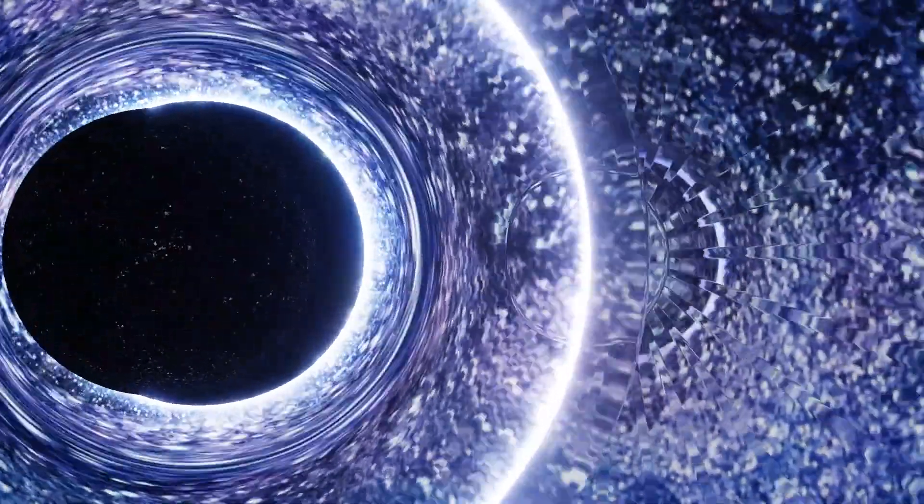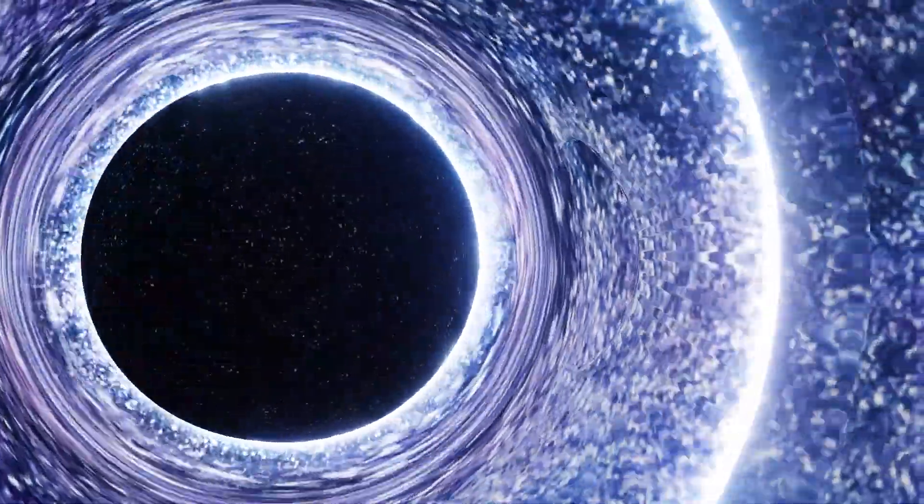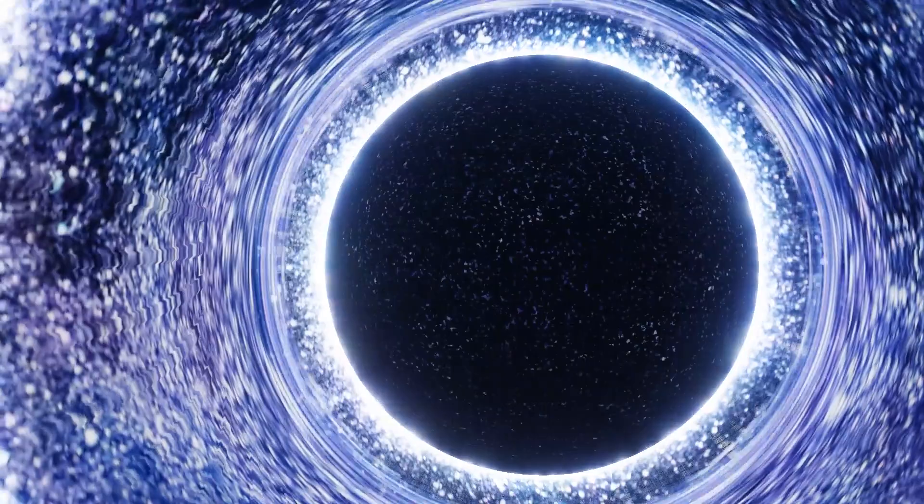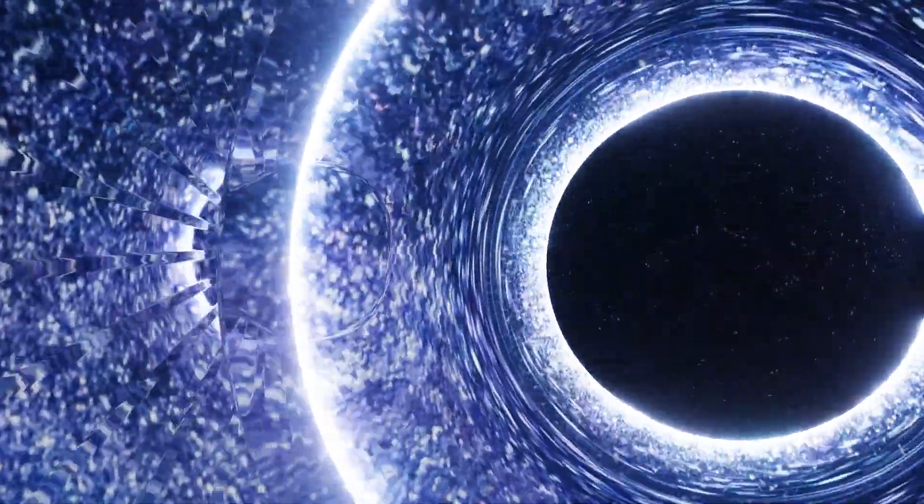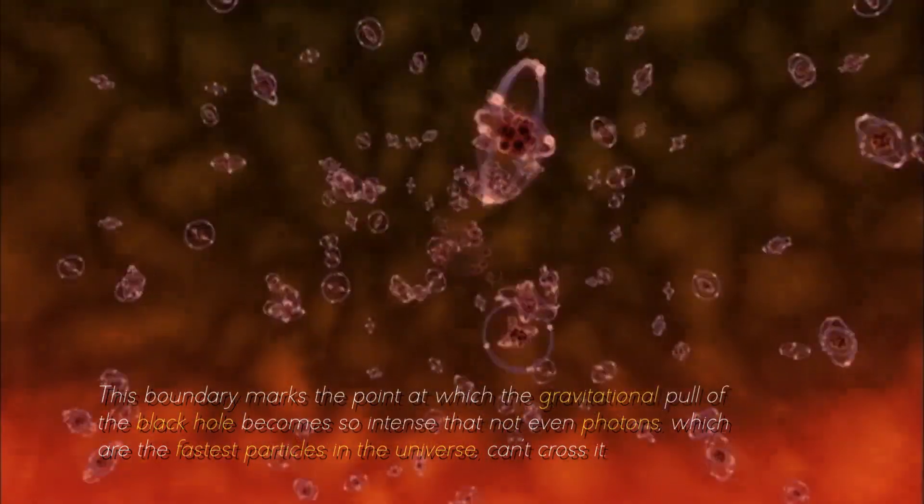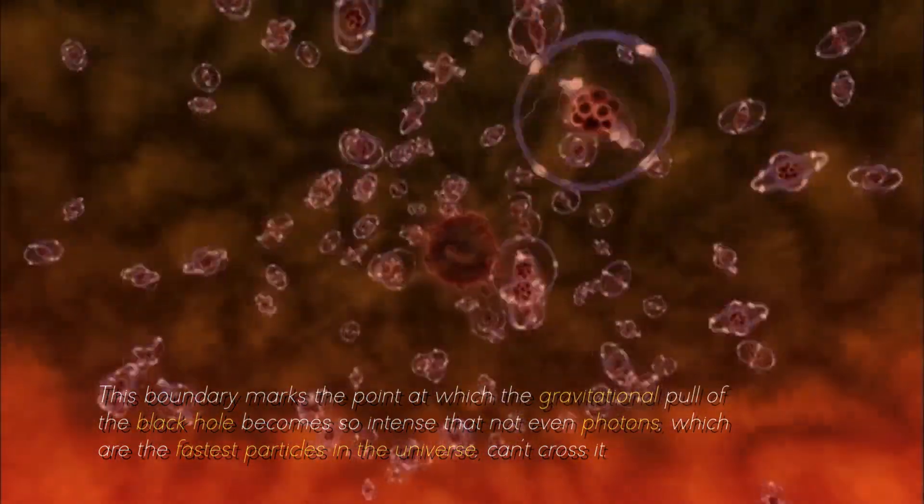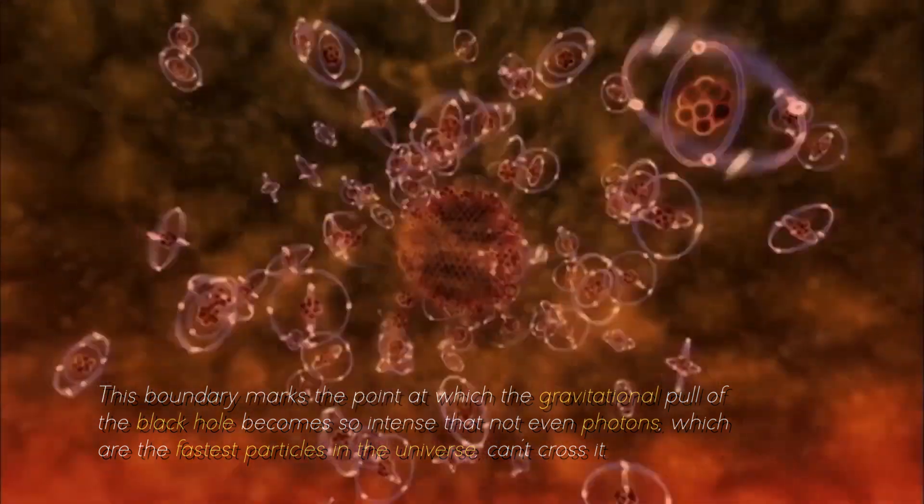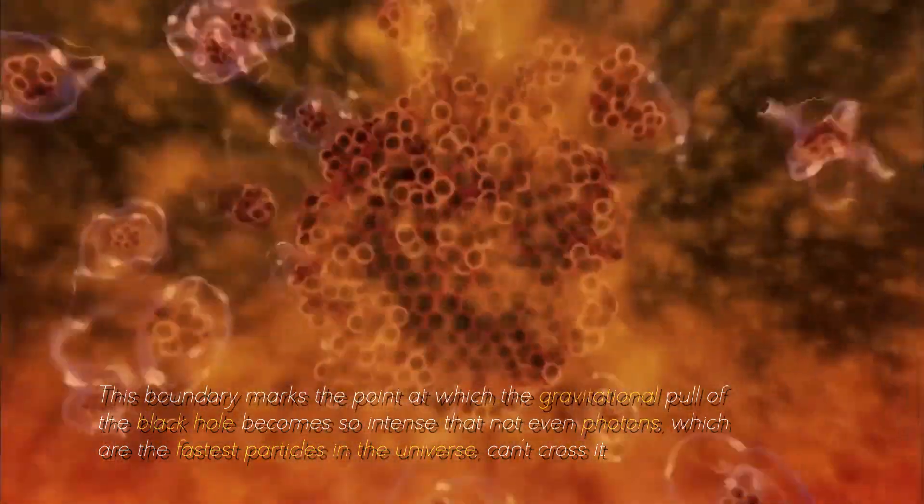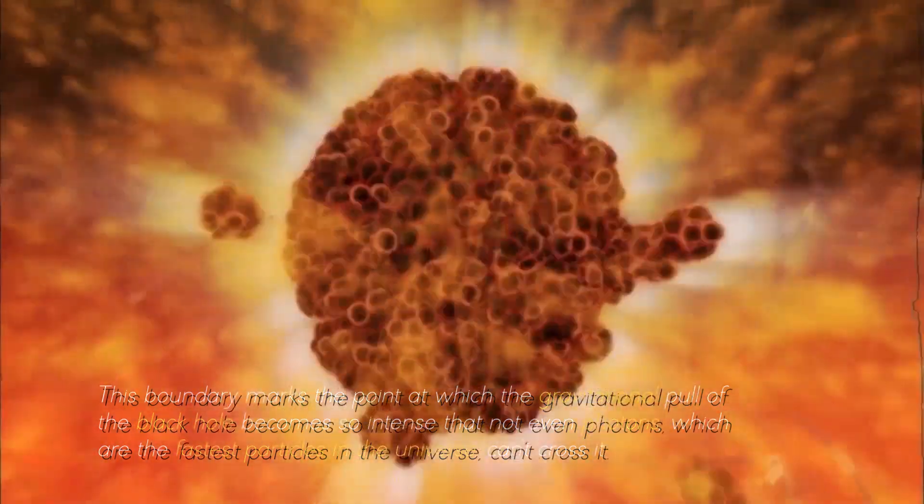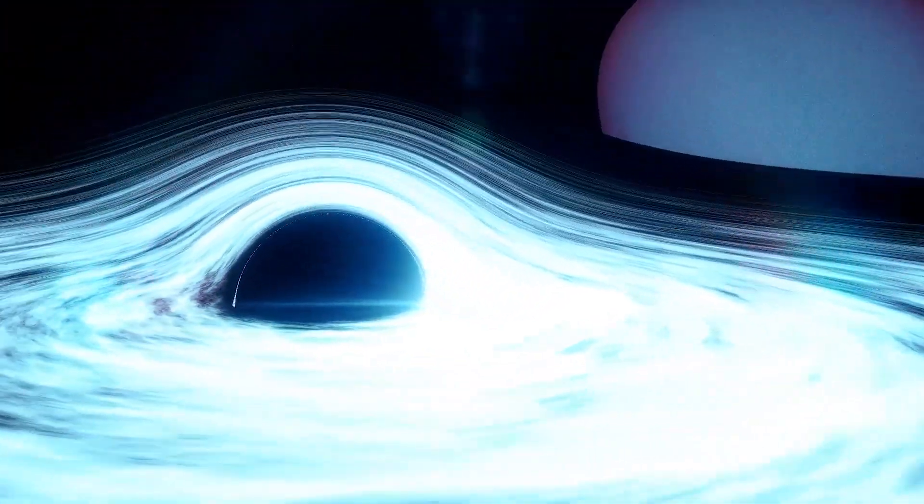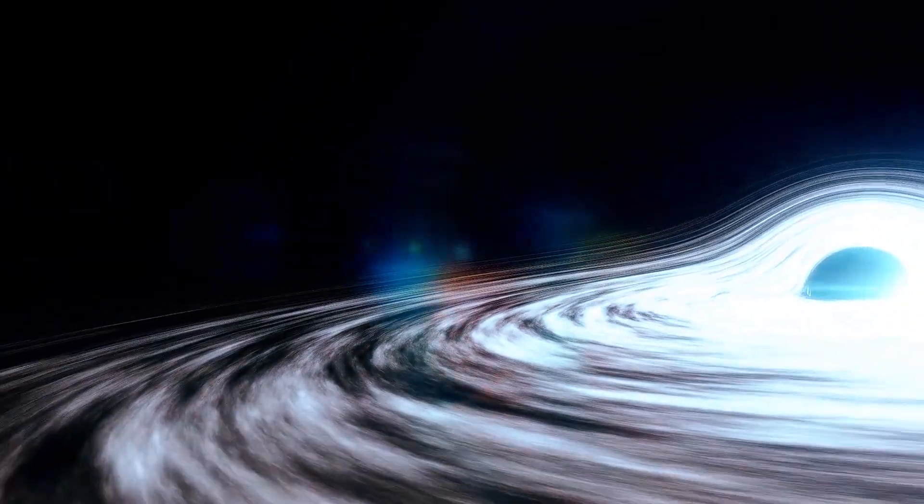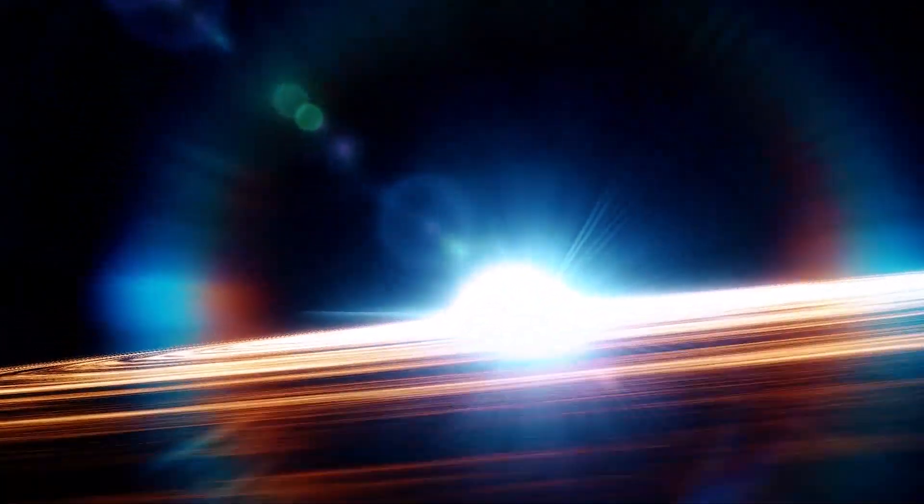A fundamental characteristic of a black hole is its event horizon, an invisible boundary beyond which escape becomes impossible, even for light. This boundary marks the point at which the gravitational pull of the black hole becomes so intense that not even photons, which are the fastest particles in the universe, can cross it. Any object or radiation that crosses the threshold is inexorably pulled toward the singularity at the heart of the black hole, a destination of no return.